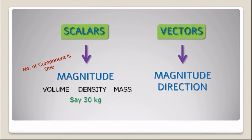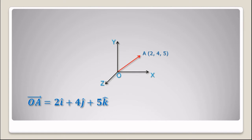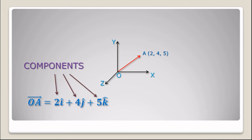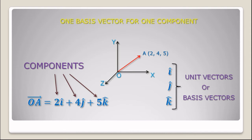Vectors are a physical quantity completely described by magnitude and direction. For example, velocity, force, acceleration, etc. Let us take the displacement of a particle from O to position A. To calculate the displacement we take the distance of point A from the x-axis, y-axis, and z-axis, which are respectively 2, 4, and 5. Then we can write vector OA = 2î + 4ĵ + 5k̂. Here 2, 4, 5 are components and i, j, k are basis vectors or unit vectors. To define vectors we need one basis vector per component.